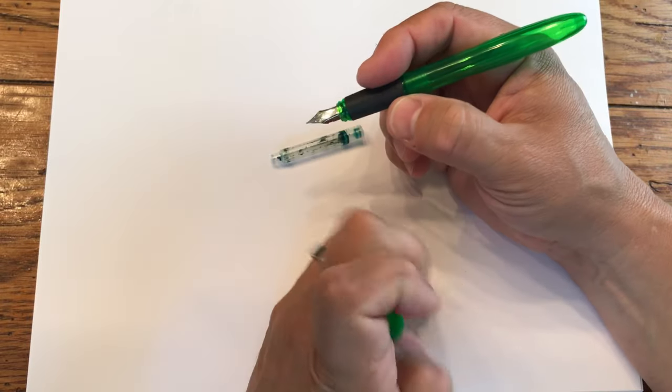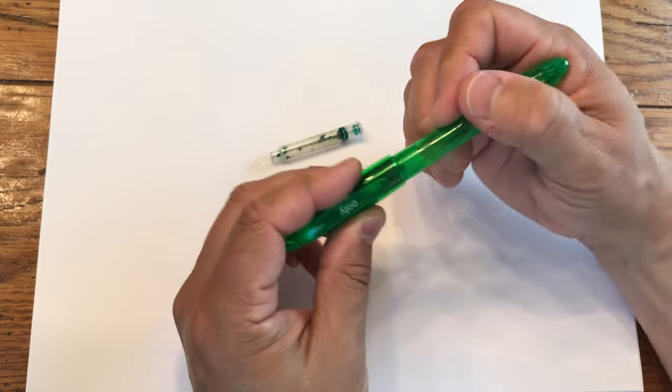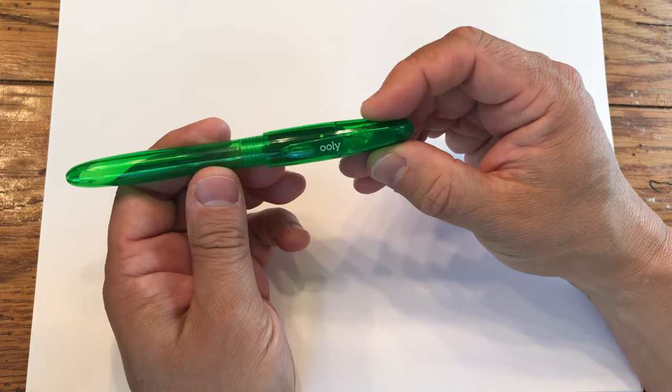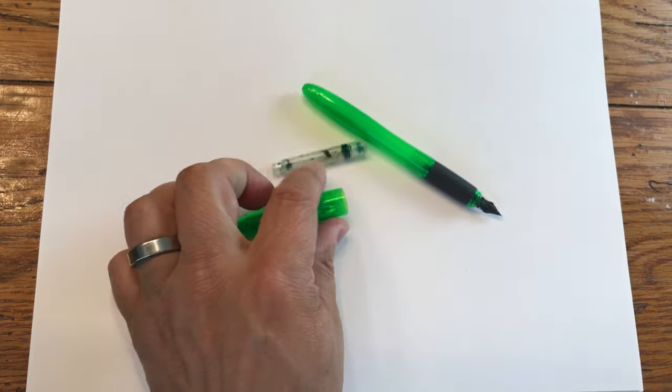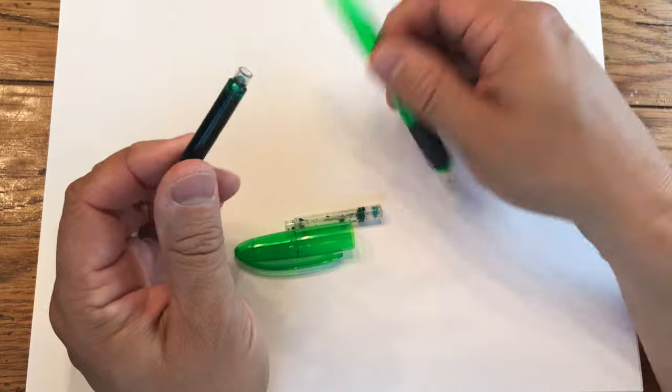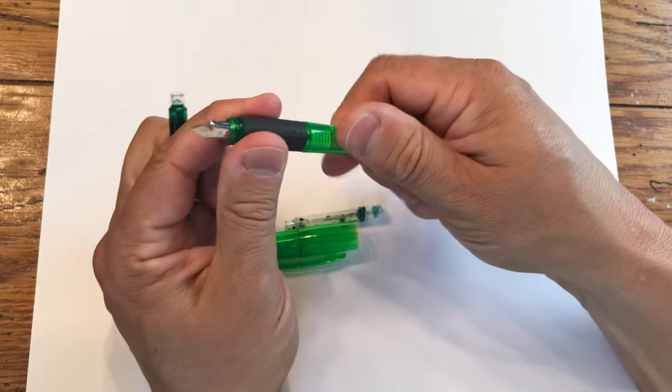So that is the Uli Splendid pen, fountain pen. I'm just going to do a quick replacement. I happen to have another green one. I do like this color of green. It's kind of a Kelly green.